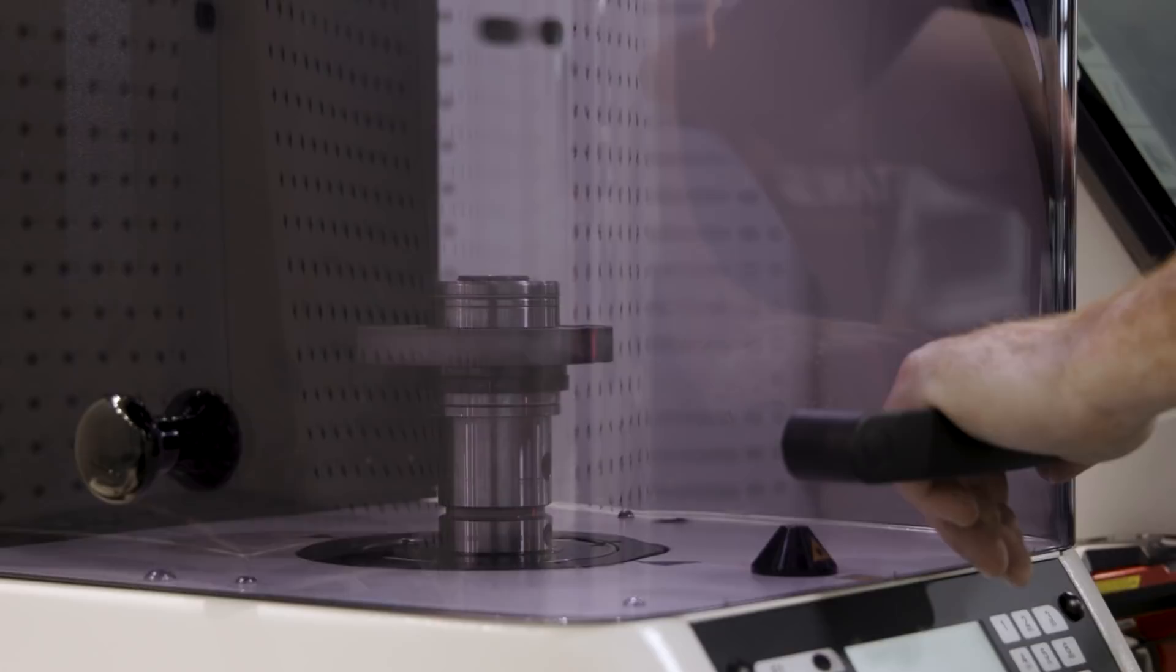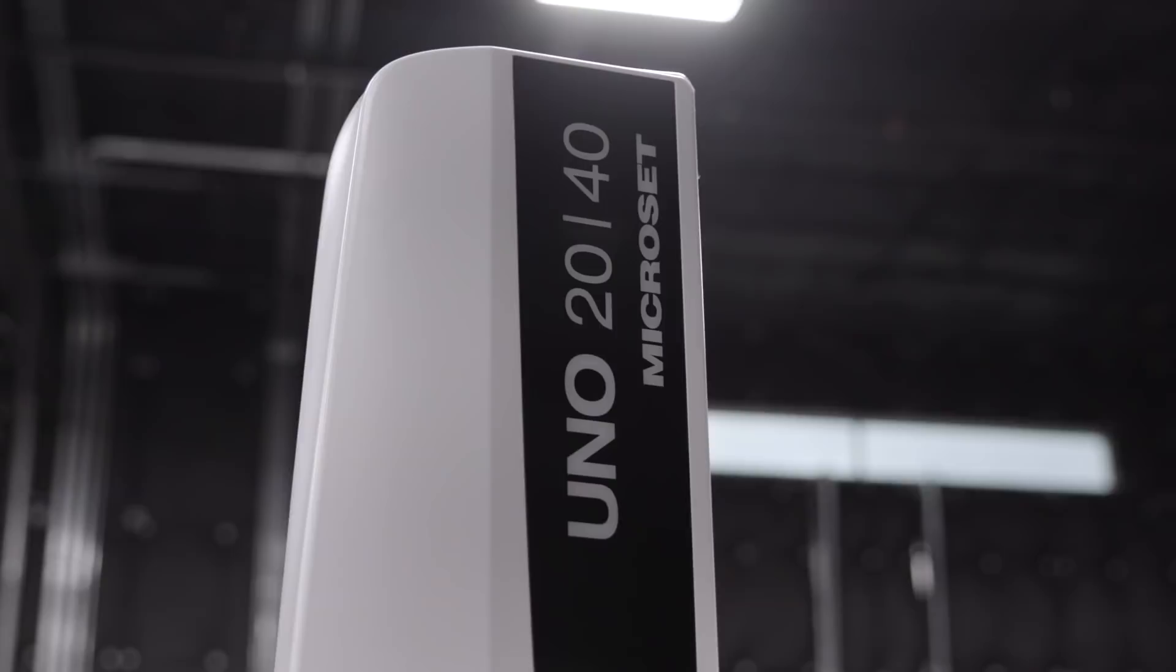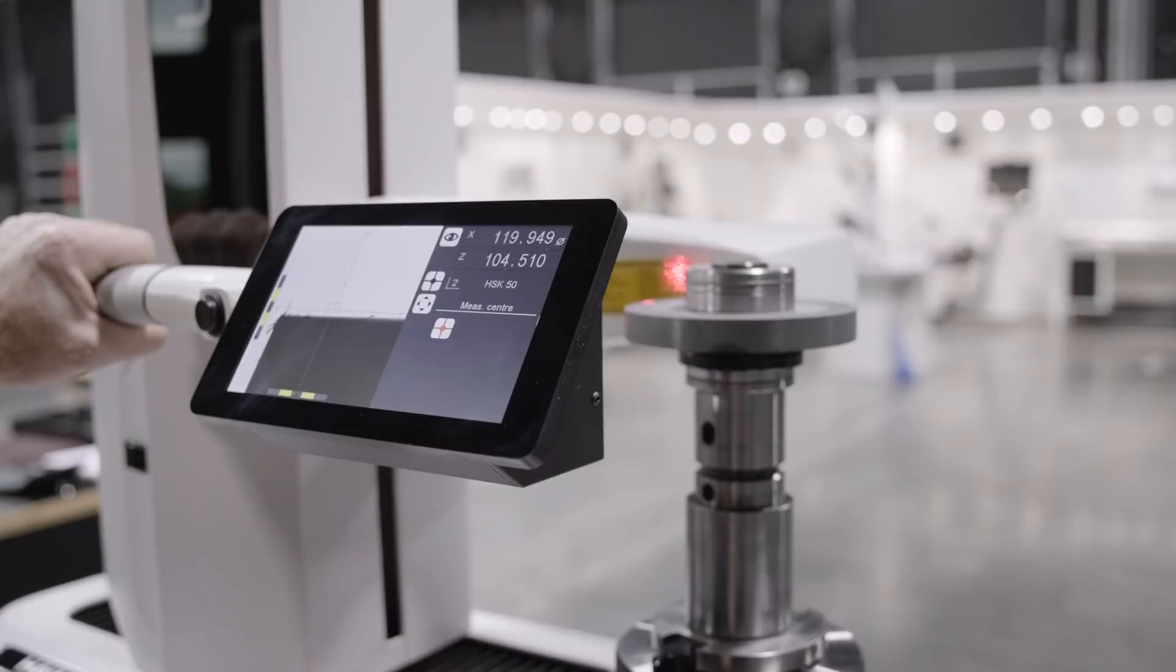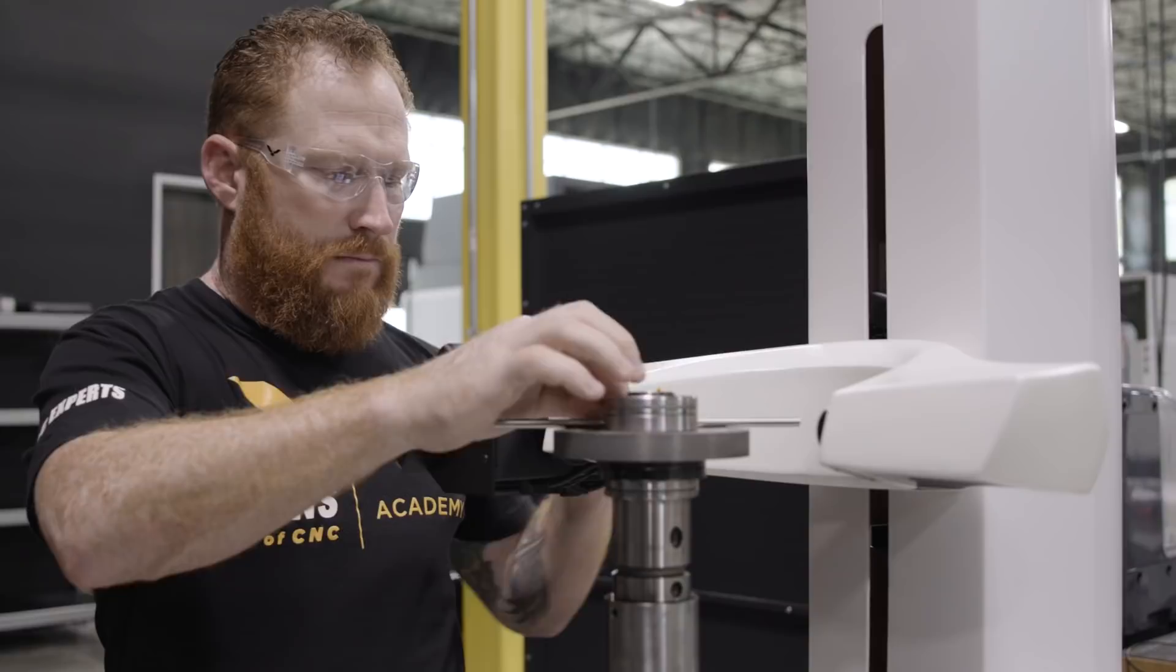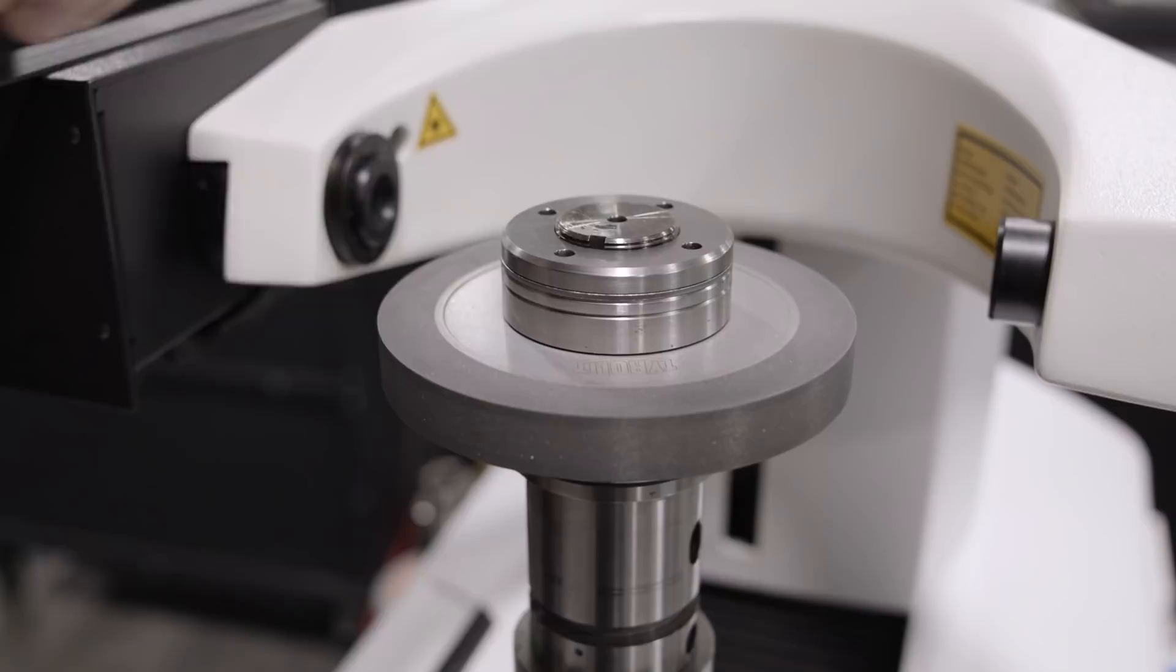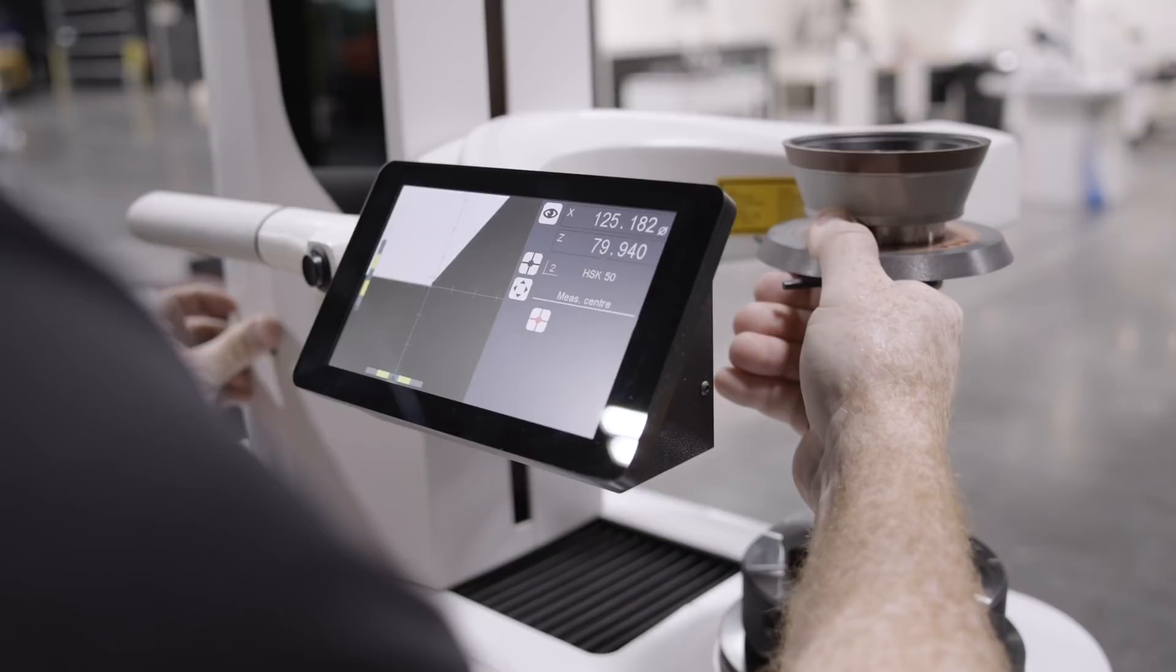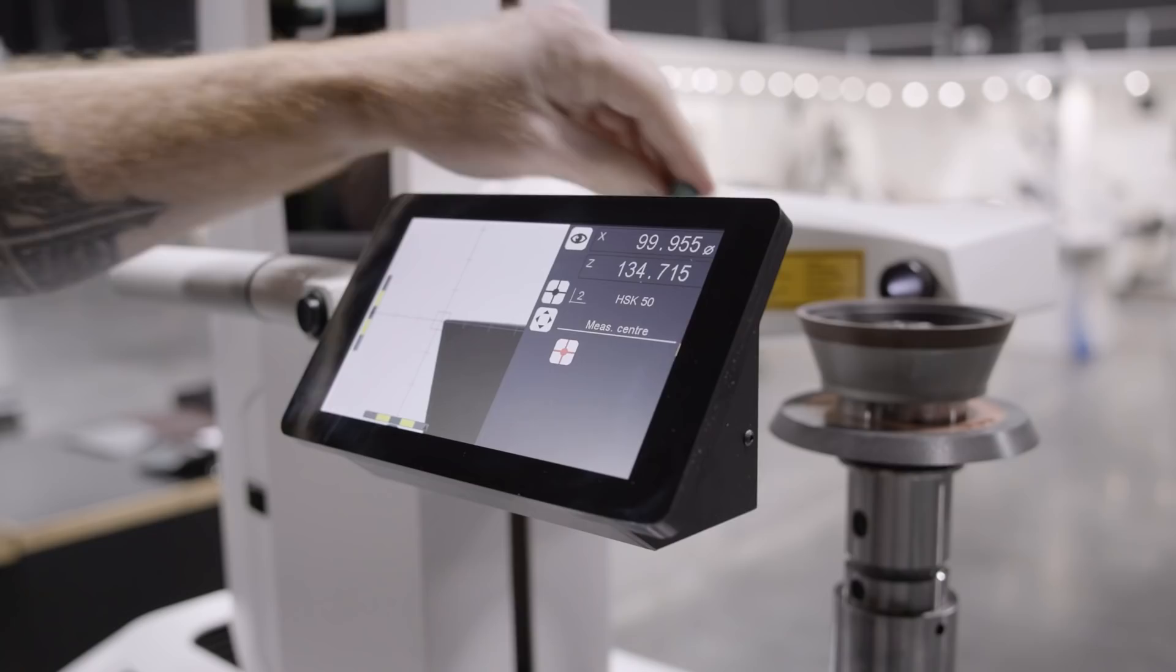Now that our wheels are balanced, we're going to go over to the Hymer Uno microset. We're going to get the exact measurements of the diameter of each wheel and its Z positioning so that when I go to my machine and do my programming, I have exact measurements. That's going to make sure that my program matches what's actually set up in the machine, make everything way easier, and I'm going to get a first article part that might only need some small adjustments to ensure that it's perfect.